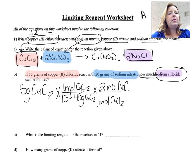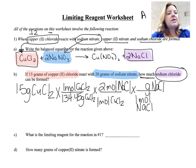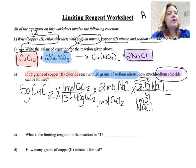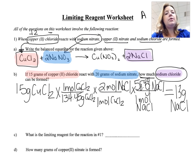Now I'm in moles of sodium chloride, but I need to know how many grams are formed. So I'll use the molar mass of sodium chloride — 1 mole equals 58.44 grams — and when I calculate this out, I get 13 grams of sodium chloride produced. Now I don't know if I can really produce that much yet; that's how much I can produce with this many grams of copper chloride.